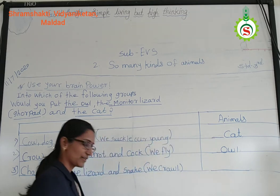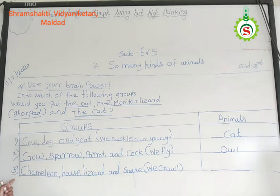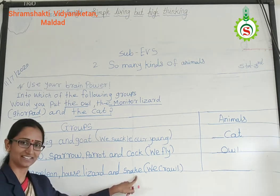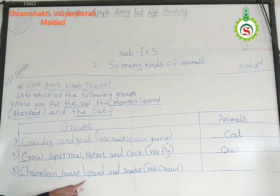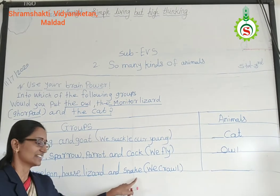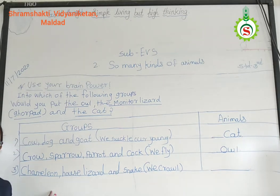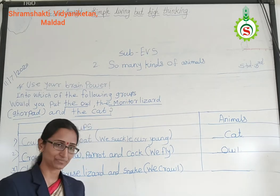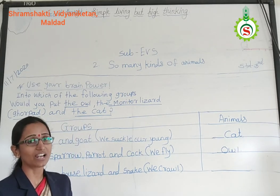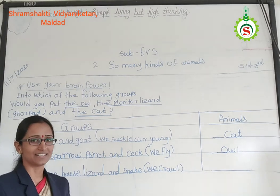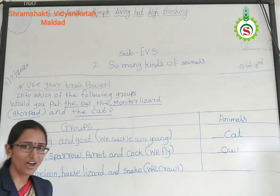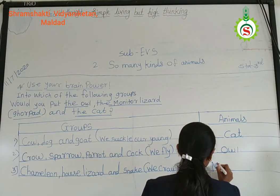Now students, look at our last group. Here is chameleon, house lizard, and snake. These all are crawl animals. In the bracket: they crawl. Which animal also crawls? Correct — monitor lizard also crawls. So write here: monitor lizard.